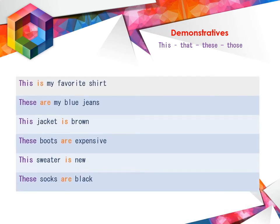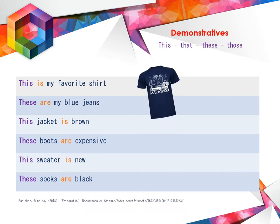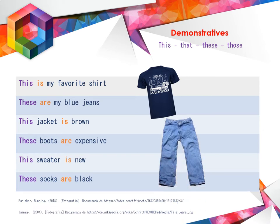Vemos ejemplos reales de los demostrativos utilizando vocabulario de ropa. This is my favorite shirt — está cerca. These are my blue jeans. This jacket is brown — tenemos singular. Cuando es singular, utilizaremos is. Cuando se vea plural, utilizaremos are, el verbo to be are.